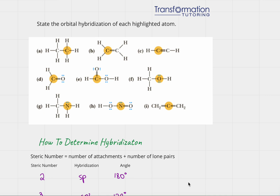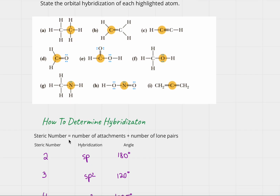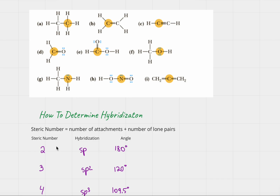State the orbital hybridization of each highlighted atom. In order to determine hybridization, we first have to figure out steric number, which is equal to the number of attachments plus the number of lone pairs of electrons. Once we know the steric number, we can easily figure out hybridization and bond angles.